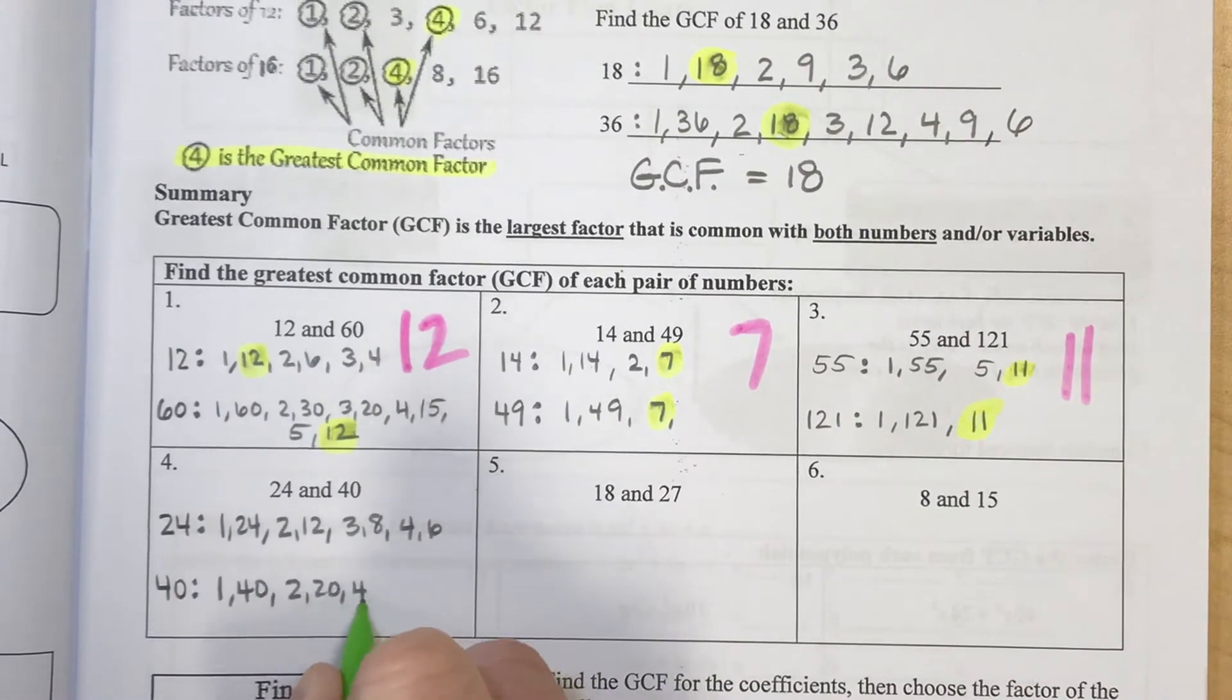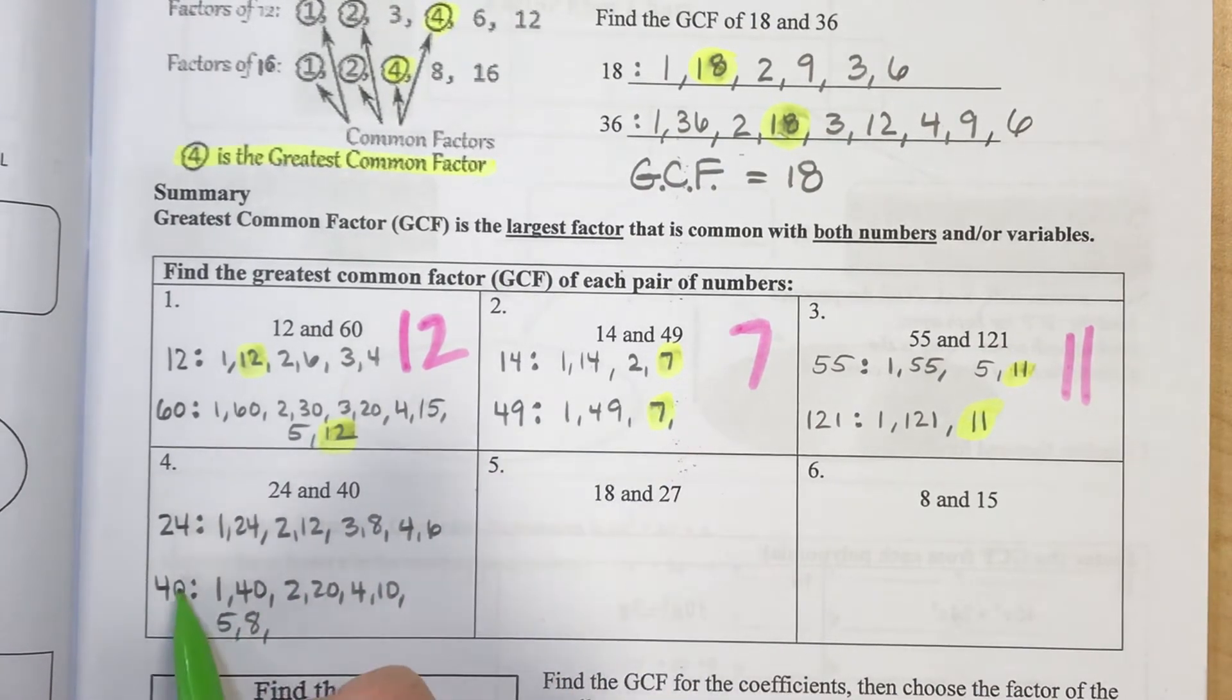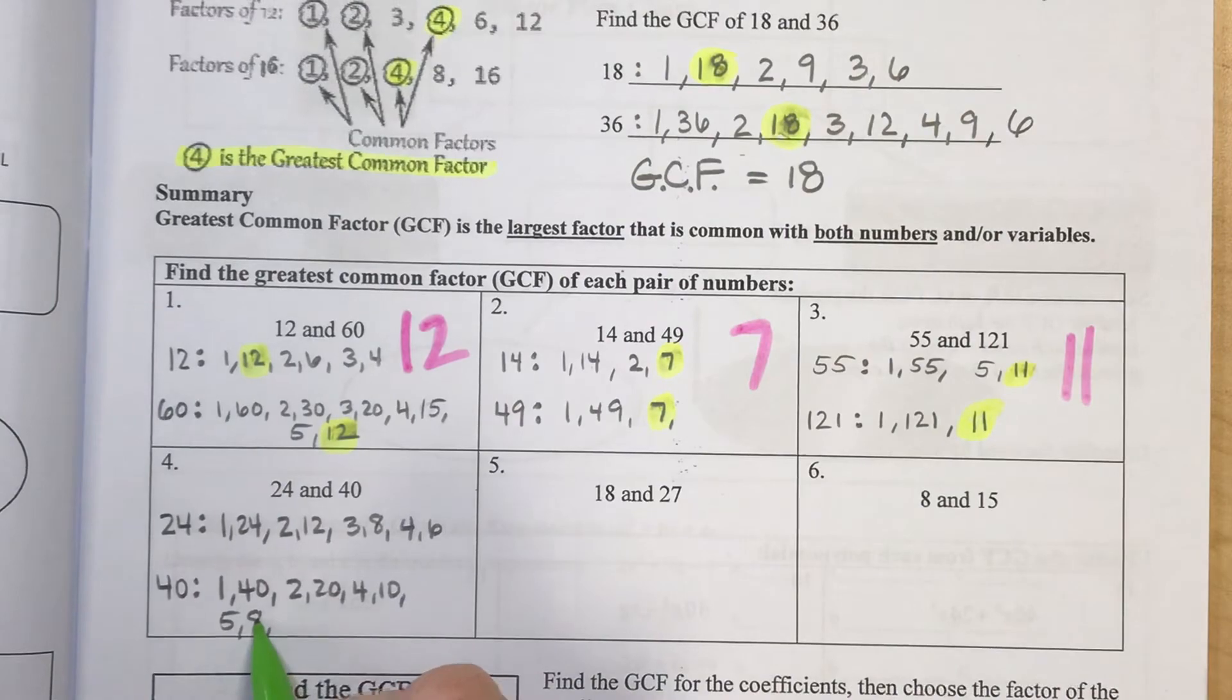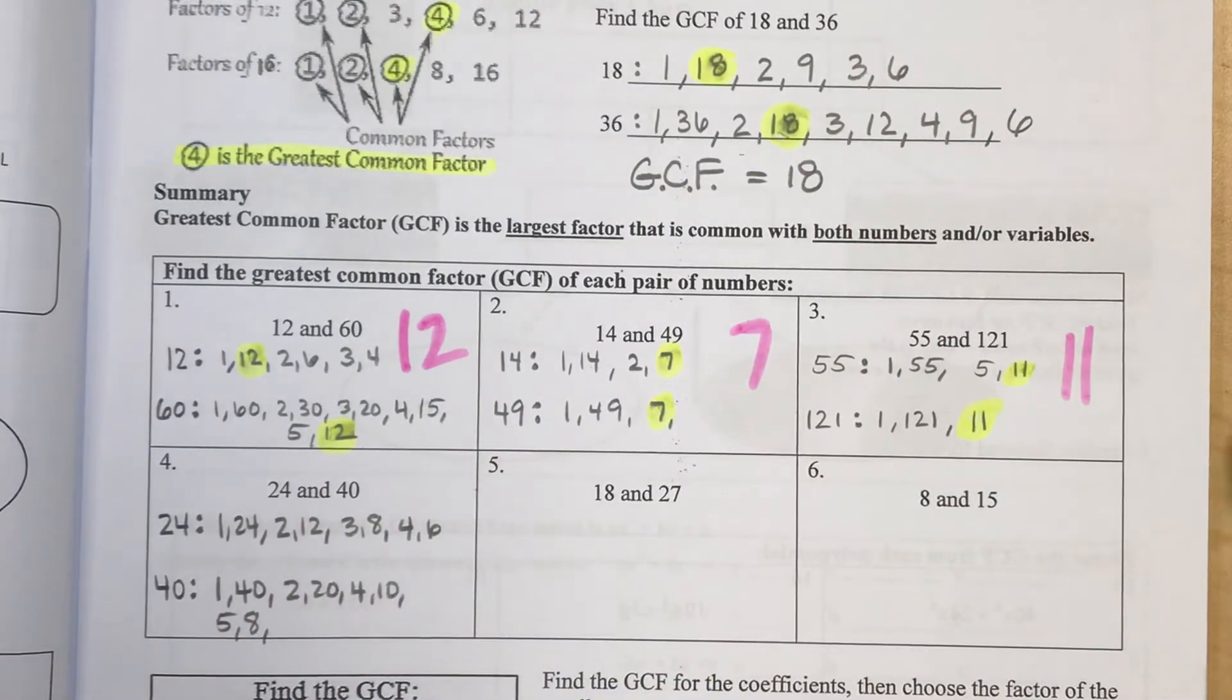3 won't go in. 4 will go in times 10. 5 will go in times 8. 40 is not divisible by 6. It's not divisible by 7. I already got 8. So I think this is as big as my list will be.